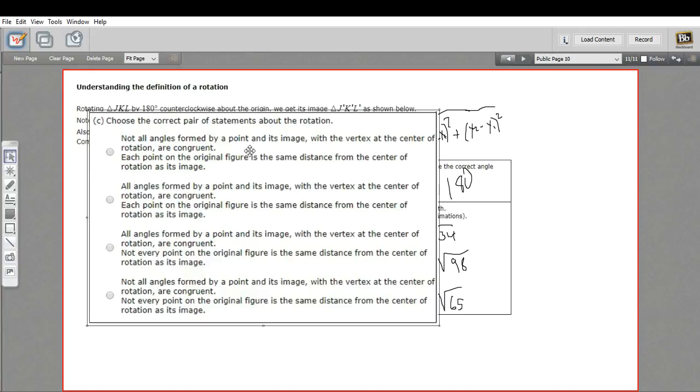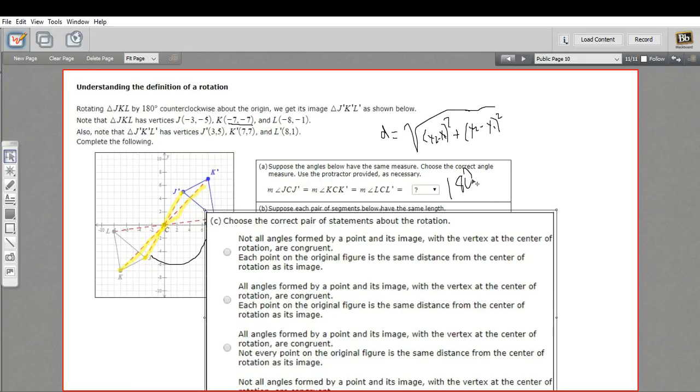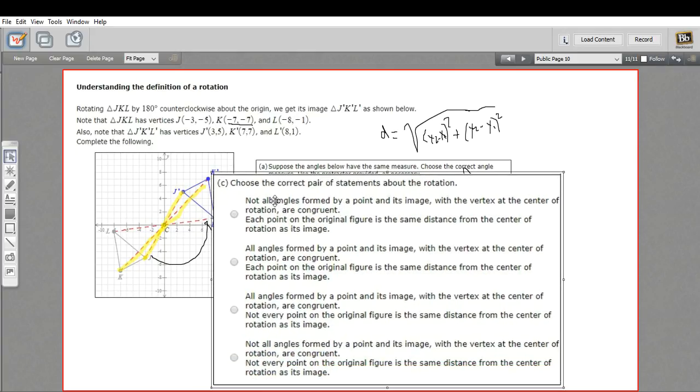This first one says, not all angles formed by a rotation and its image with the vertex at the center of rotation are congruent. And that's what we figured out in this first part. And what we found is that they are congruent. But they do equal each other. And in this case, they're all 180 degrees. So it looks like it can't be the first one.